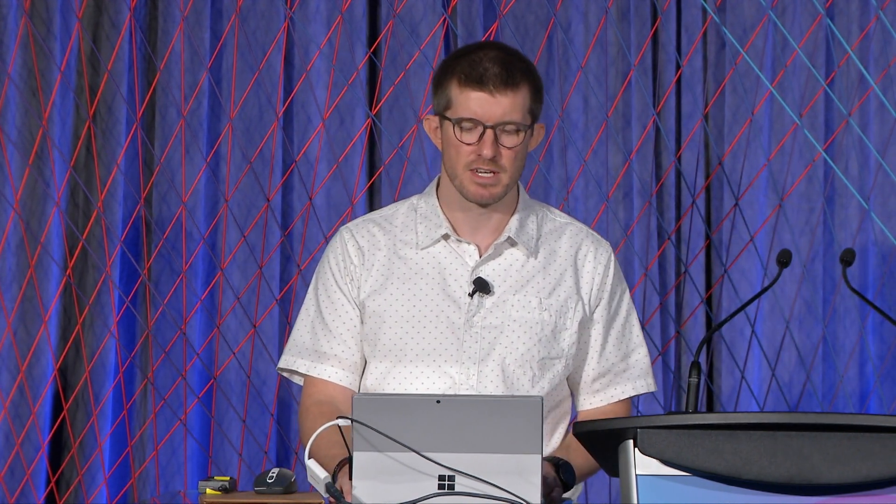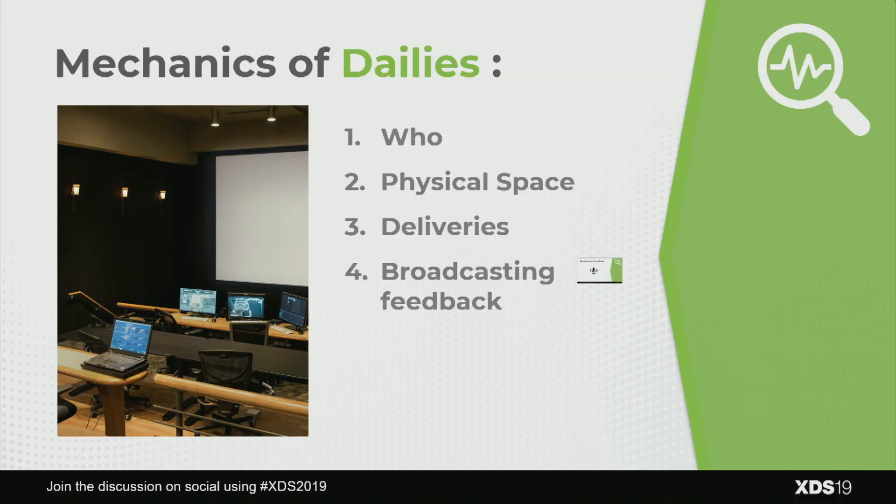Other considerations: physical space — do you have a proper room, enough seating, and a powerful enough computer to display assets? Are you broadcasting to remote people? Deliveries — is there a standardized submission template covering the phase, delivery date, artist name, and external team? Standardizing your asset template helps humanize the people doing the work. Think carefully about how assets get into Shotgun. Broadcasting feedback — sending all notes at once is super efficient.